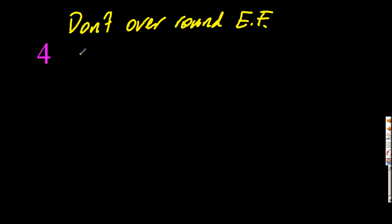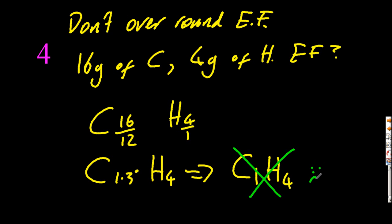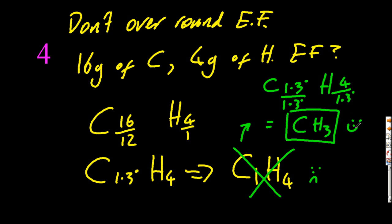For four, if they're going to ask you an empirical formula question, they're going to be tempting you to over-round. So by doing this simple one, you can see it's 1.3 and hydrogen-4. Don't be tempted to say C1H4. That would be wrong. You've over-rounded. Divide by the smallest number, and you'll get the numbers that you need. C1H3.